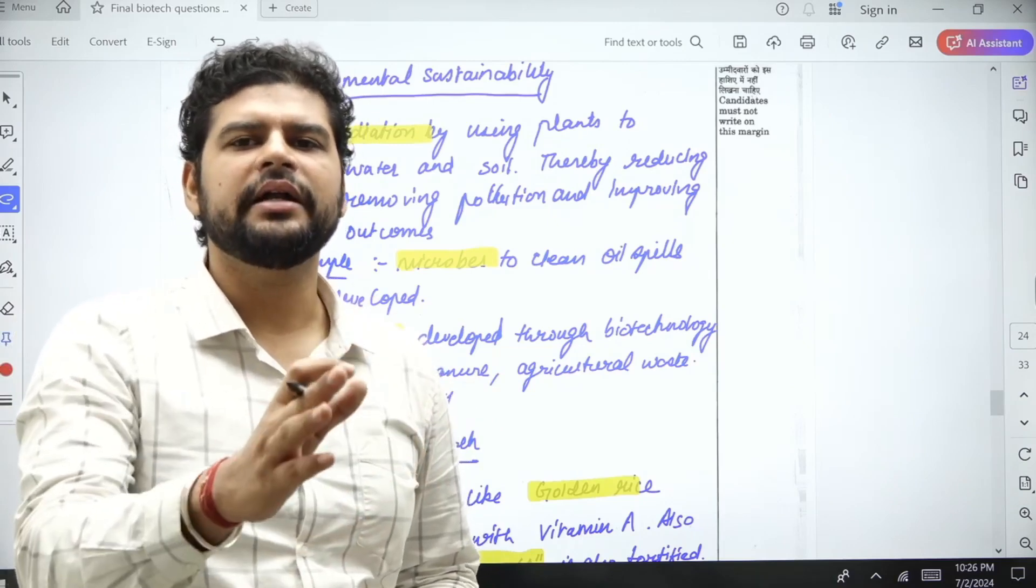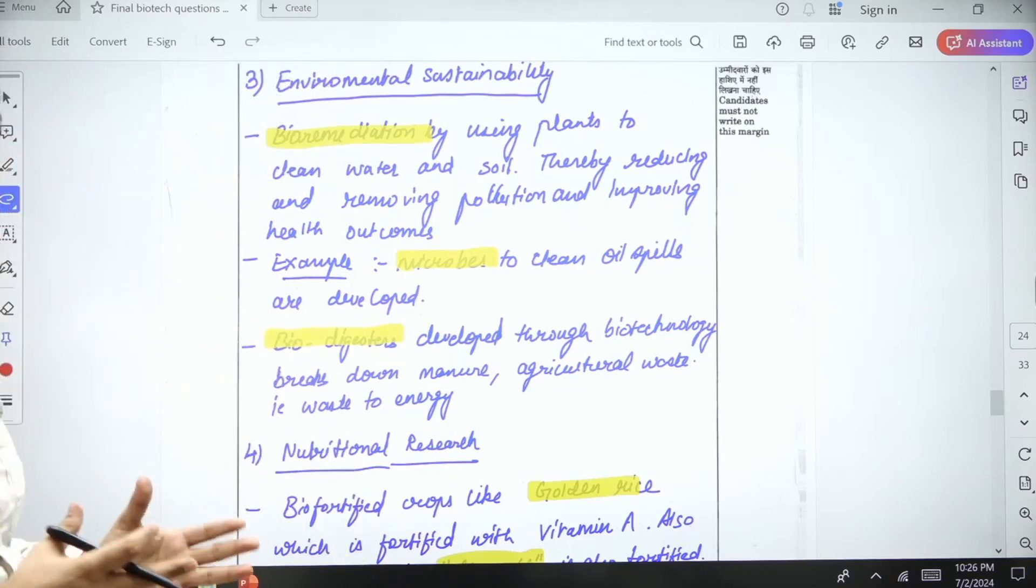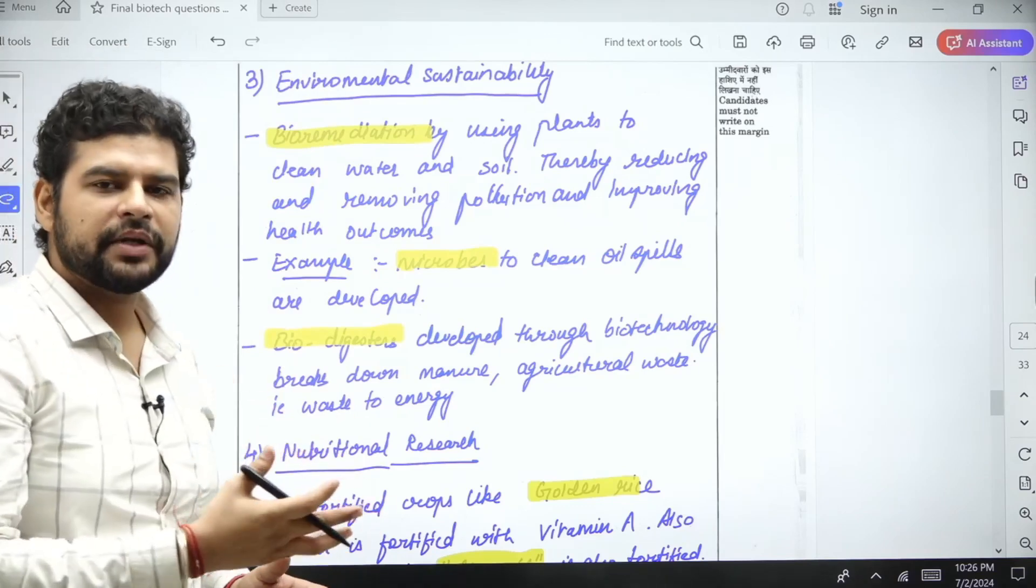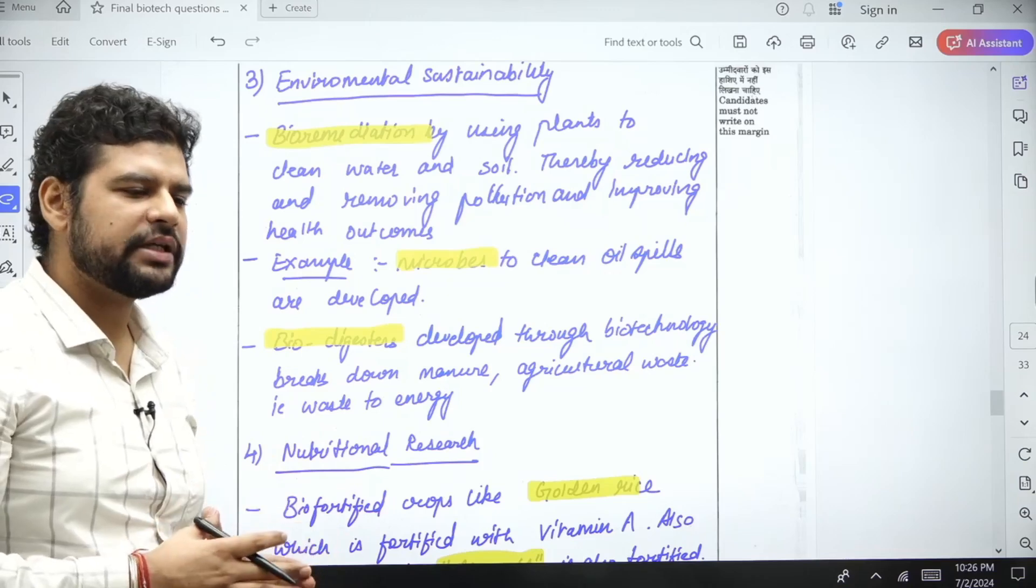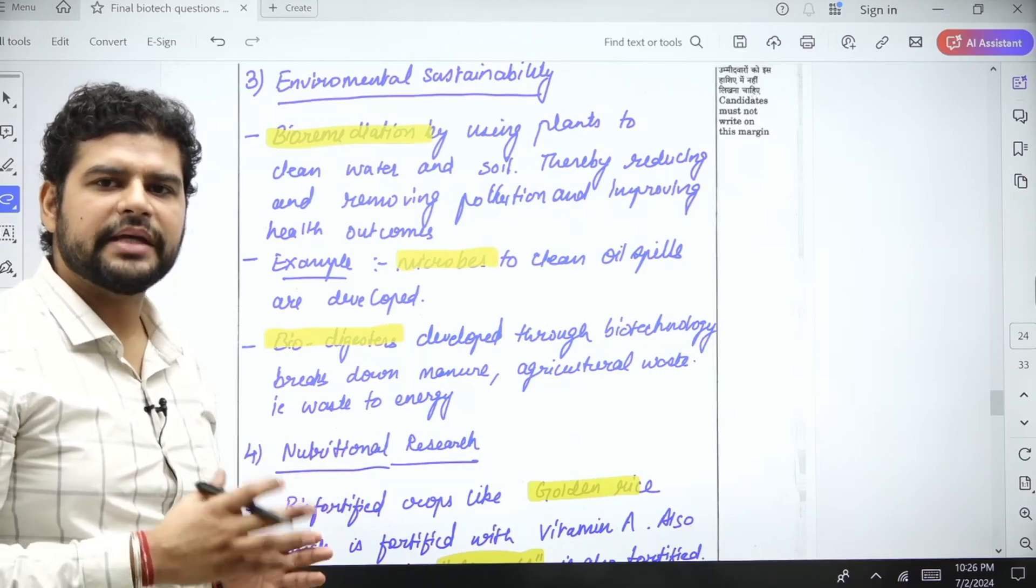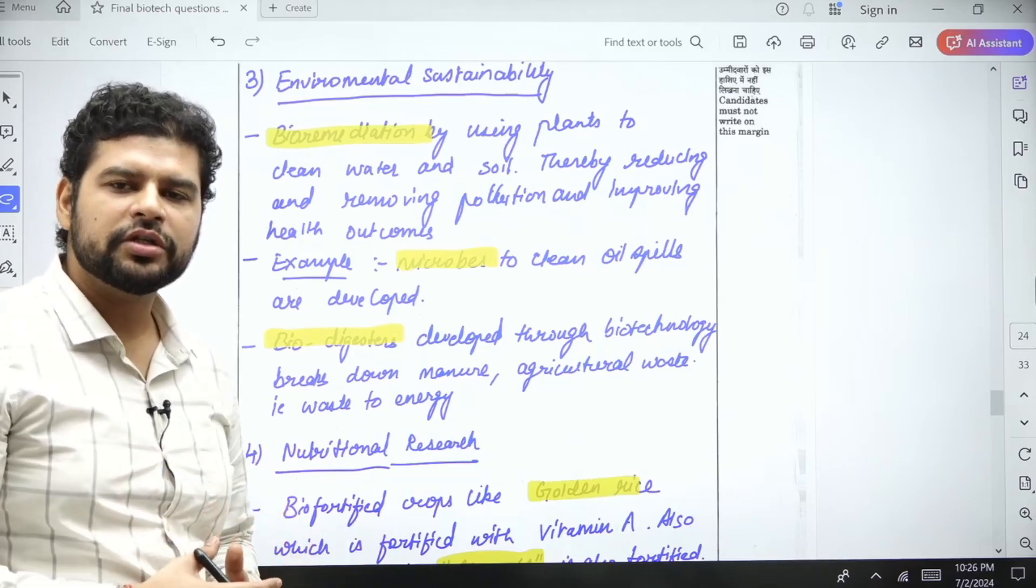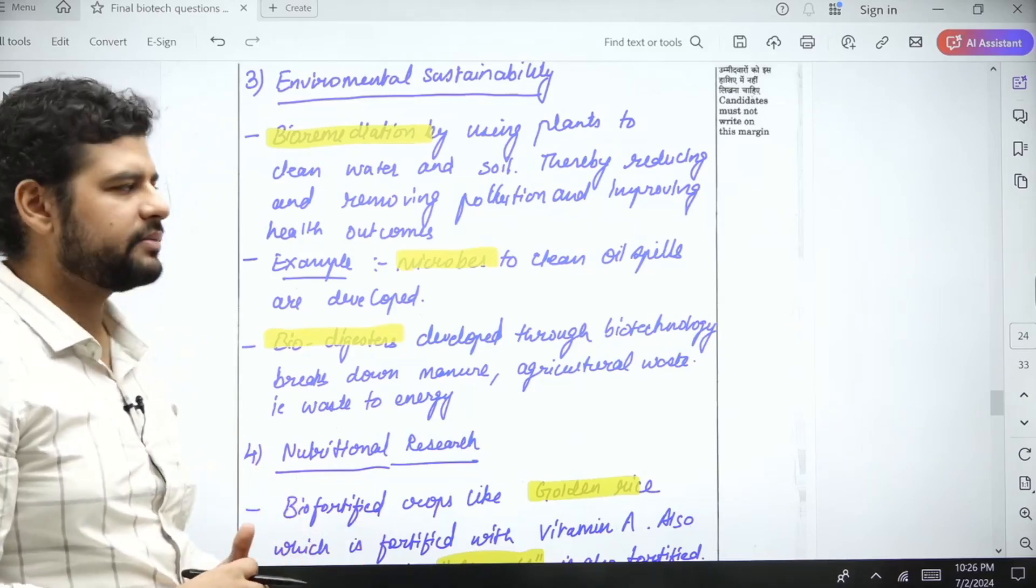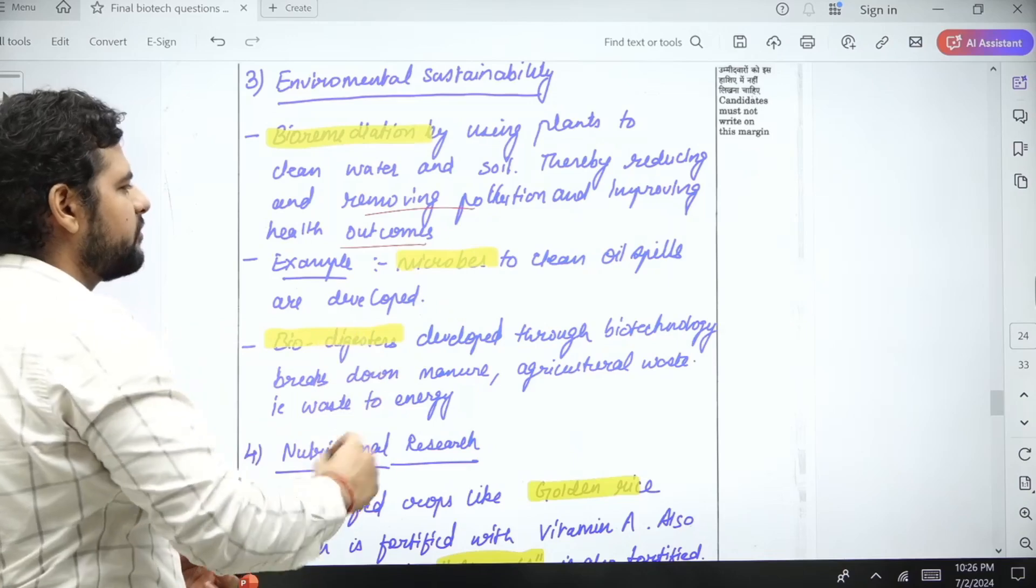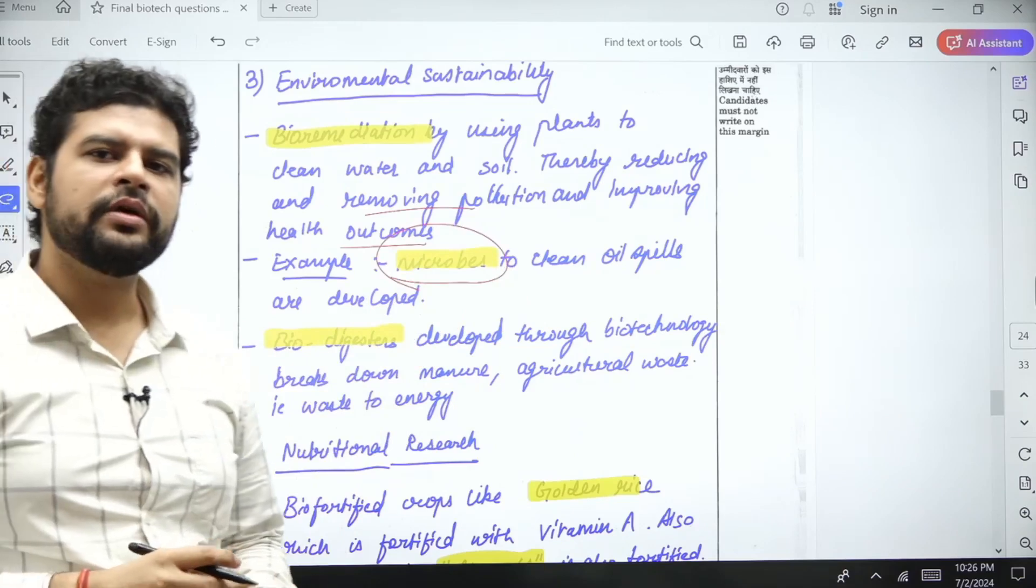In environmental sustainability, you can have bioremediation of pollution. There is pollution in water, in land, in the air. So bio-based or biological product-based remediation can be used to directly clean these areas. This will remove pollution and improve health outcomes.